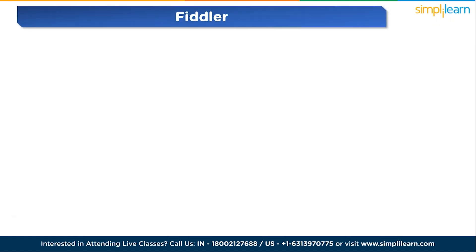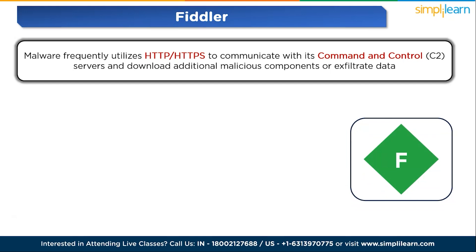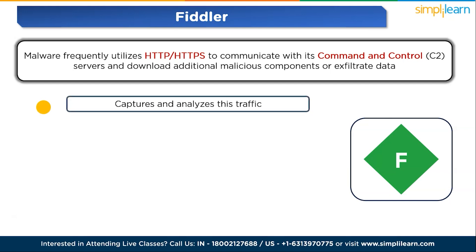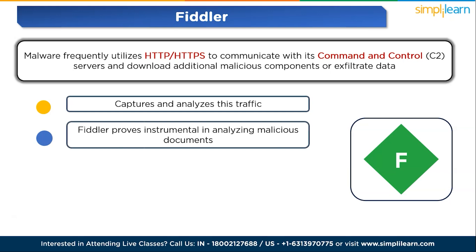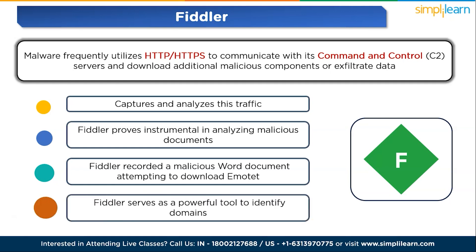The sixth tool is Fiddler. Malware frequently utilizes HTTP or HTTPS to communicate with its command and control servers and download additional malicious components or exfiltrate data. Fiddler functions as a web proxy that captures and analyzes this traffic, offering insights into the malware's communication patterns. Fiddler proves instrumental in analyzing malicious documents employing macros to download a harmful payload — for example, recording a malicious Word document attempting to download Emotet from multiple websites, providing a clear view of the domains hardcoded into the document. It serves as a powerful tool to identify domains hardcoded in malicious documents and assess the malware's propagation and potential evasion strategies.